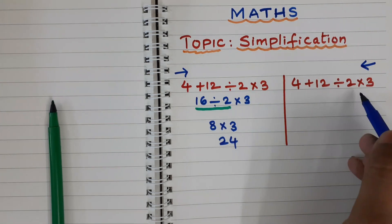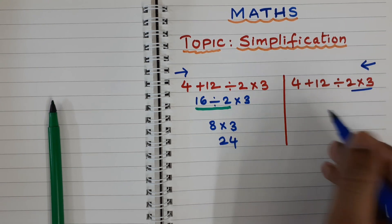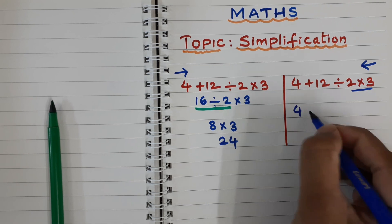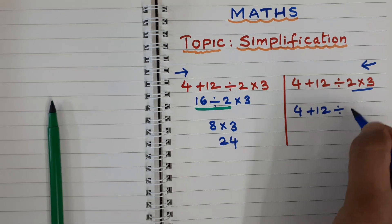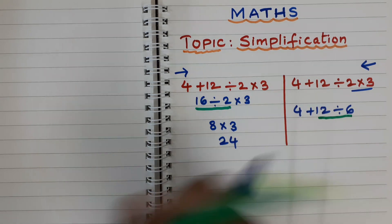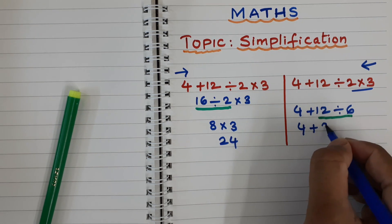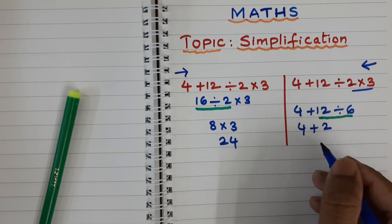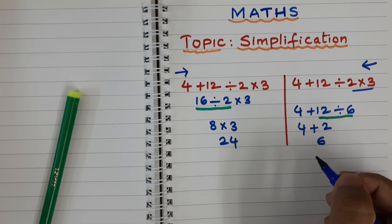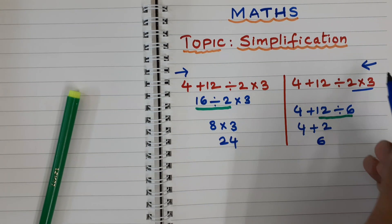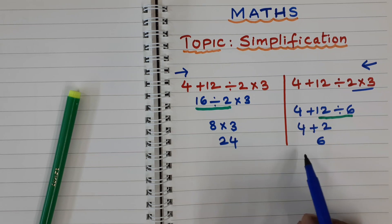Let us now do the calculation from the right side. Right side means you start from 2 into 3. So 4 plus 12 divided by 2 into 3 — first solve 2 into 3, which is 6. So now we have 4 plus 12 divided by 6. 12 divided by 6 is 2. Then 4 plus 2 gives answer 6. Now I got two different answers.